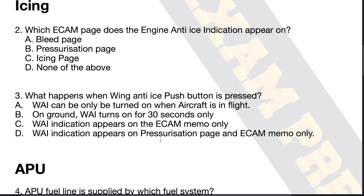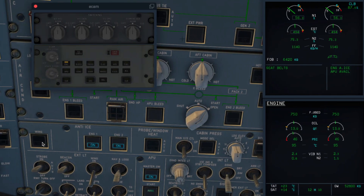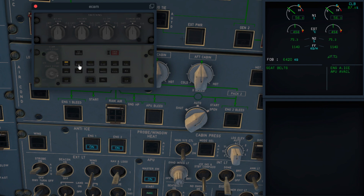The answer for this question is B — on the ground, wing anti-ice turns on for 30 seconds only. Option A is wrong: wing anti-ice can be turned on only when the aircraft is in flight — that is incorrect. The wing anti-ice is on the icing panel. I've opened the bleed page so you can monitor the wing anti-ice being turned on. I switch on the wing anti-ice, and if you notice, the anti-ice indications popped up.